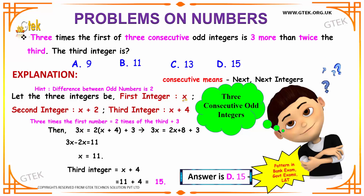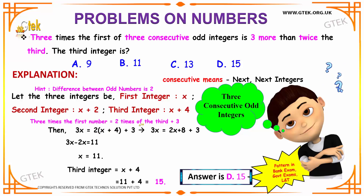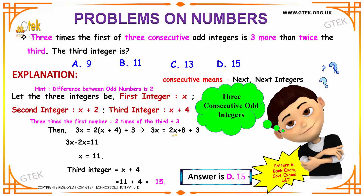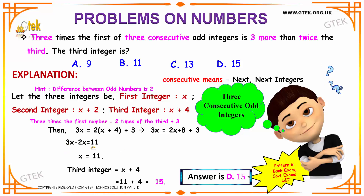3 times the first number is nothing but 3 times x, that is 3x, and 2 times the third integer is nothing but 2 into x plus 4. To that, you need to add 3. Expanding the right-hand side, you get 2x plus 8 plus 3. Rearranging the equation, you get 3x minus 2x is equal to 11. x is equal to 11.